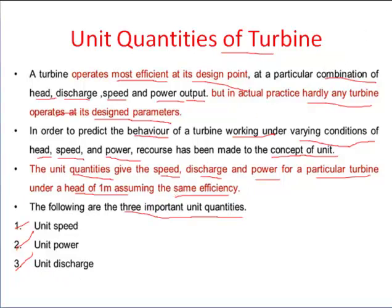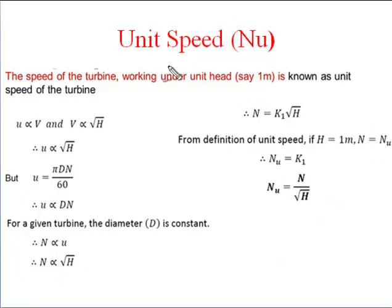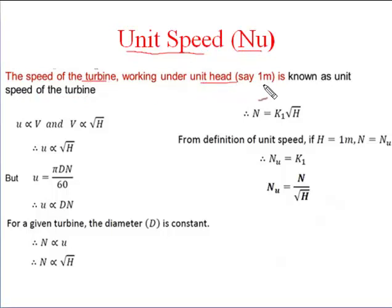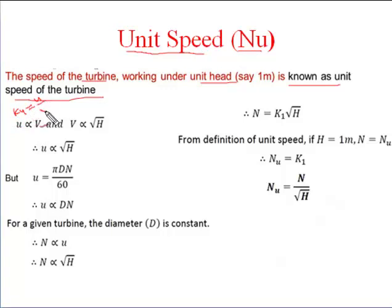First, we will discuss unit speed, represented by N_u. The speed of the turbine working under a unit head of one meter is known as the unit speed of the turbine. We know that the speed ratio K_u is equal to u divided by v, where u is the blade velocity and v is the jet velocity.